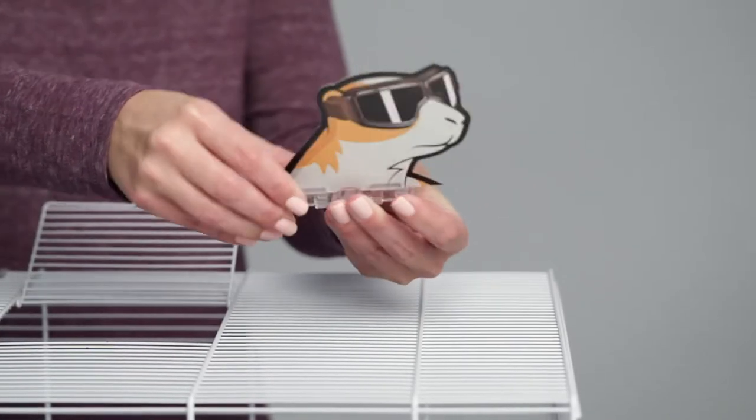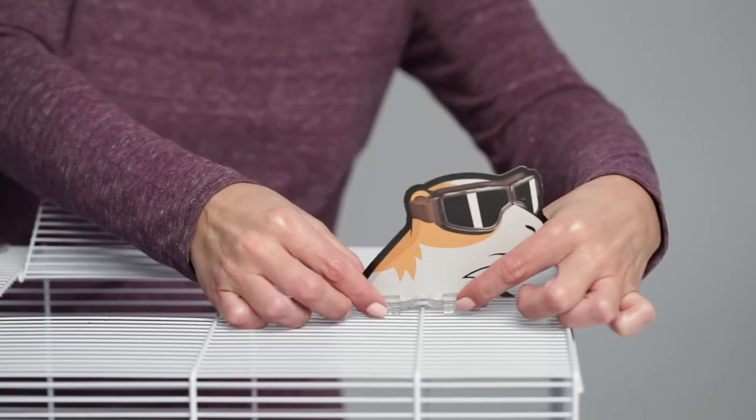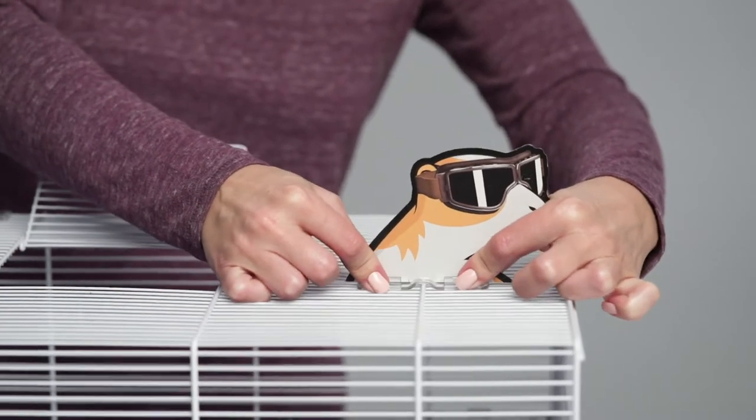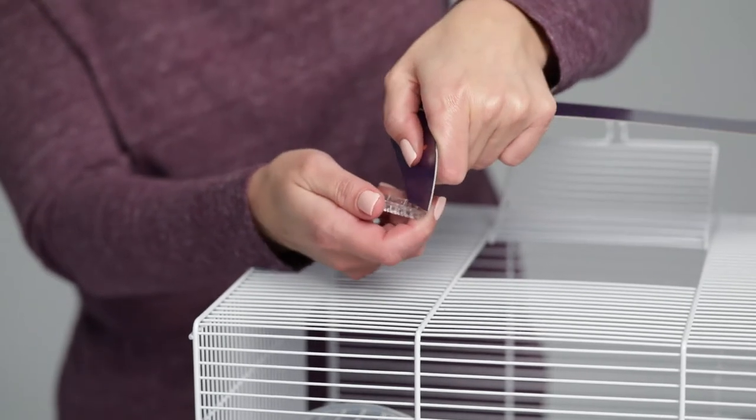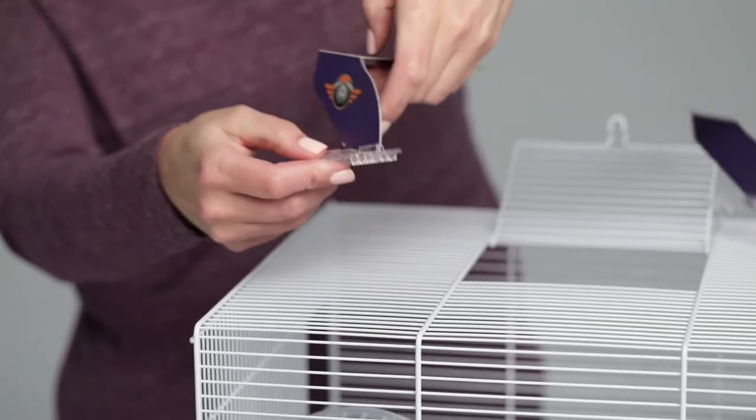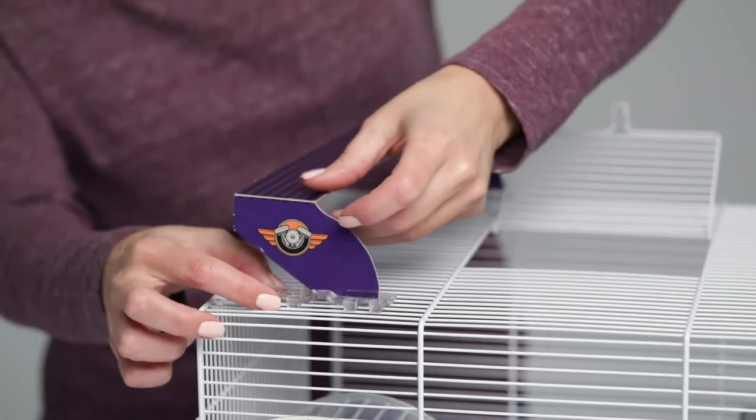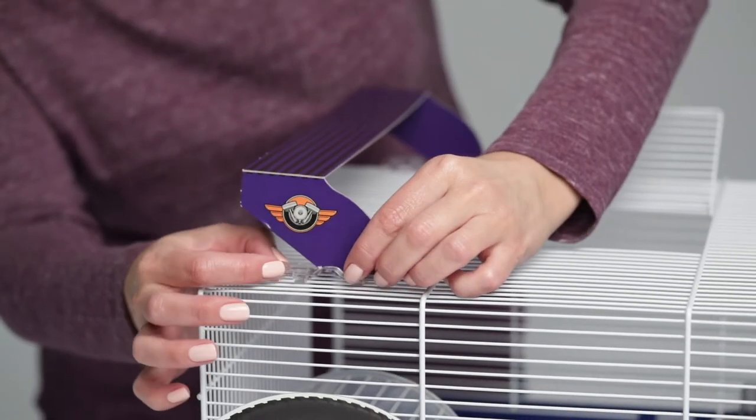Your Critterville hamster home comes with fun clip-on art that attaches to the outside of the home. Simply slide the decor pieces into the rectangular plastic clips, then attach the clips to the wires.